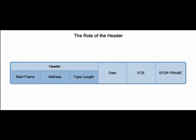The frame header contains the control information for the specific logical topology and media used. Frame control information is unique to each type of protocol, but typical frame header fields begin with the start frame, which tells devices along the way that a frame is coming. Next is the address portion, which is the data link layer source and destination address. Finally, the type length field is an option that states the kind of data or the length of the frame. Depending on the protocol being used, additional fields may also be present.